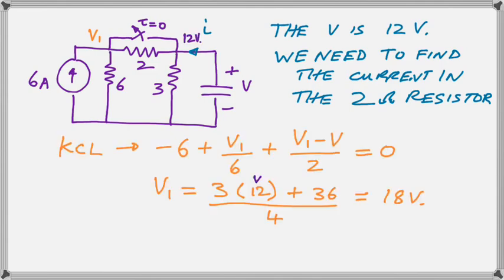We write a KCL equation for the node labeled V1. Each of those three terms represents a branch at V1. The minus 6 is the 6 amp source itself. The V1 over 6 is the current through the 6 ohm resistor. And the V1 minus V which we know to be 12 volts divided by 2 is the current through the 2 ohm resistor. When we solve for V1, we discover that the voltage at V1 is actually 18 volts.